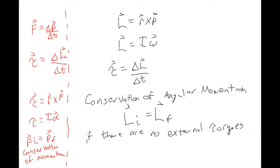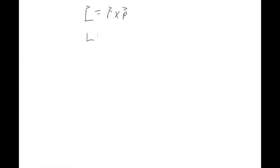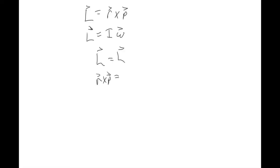We'll start with a common thing you'll see. We have these two relationships for angular momentum, and a lot of questions will give you three of these things and ask you to find the fourth. Just like with torque where we set the two torques equal to each other, if we do that here, then we get r cross p equals I omega.